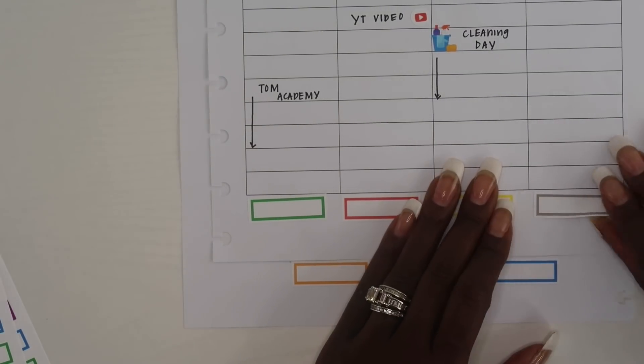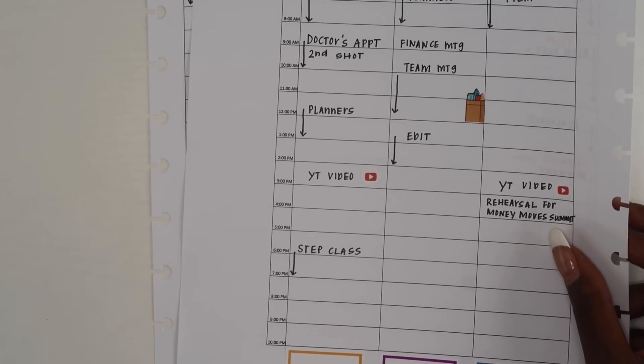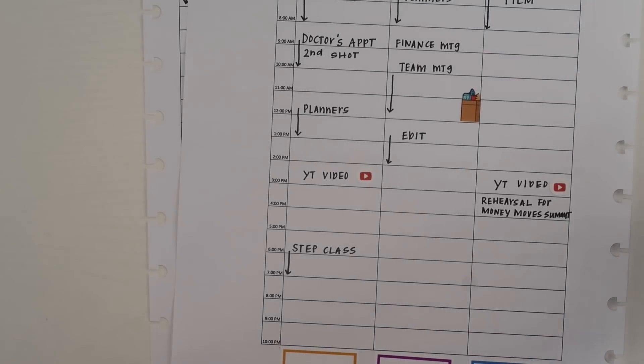My next tip is to make sure that you use stickers that have white space and room to write. As you can see, I've added my colorful boxes at the very bottom of my planner and this is where I'm going to keep track of what we're eating for dinner.